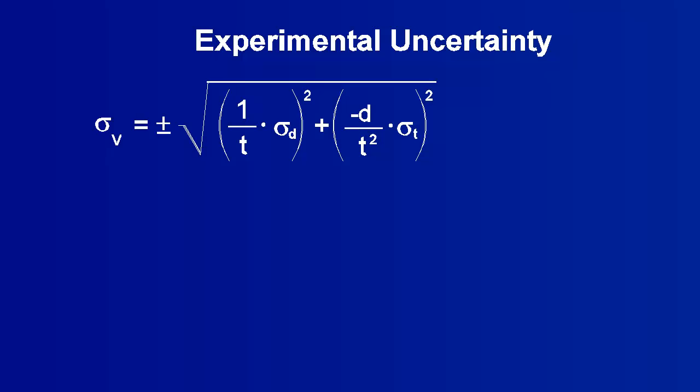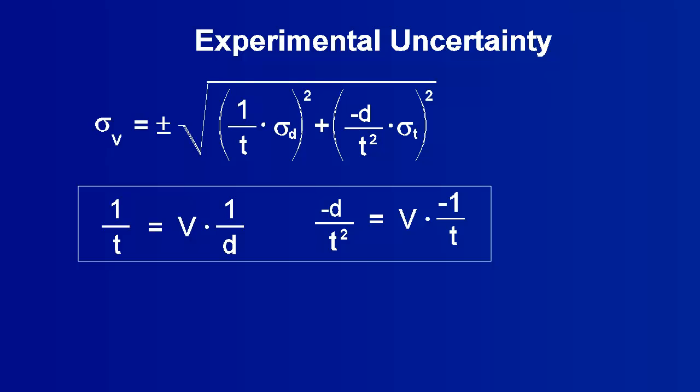Let's rearrange the equation for the velocity uncertainty. The partial derivative of v with respect to d, or 1 over t, can be multiplied by 1, d over d, and then simplified by substituting v in for d over t. The partial derivative for t can also be simplified.